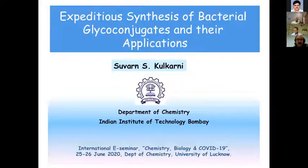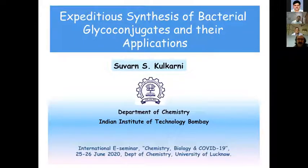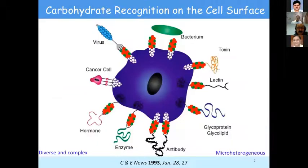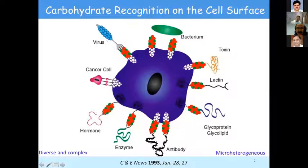Today I'm going to talk about synthesis of rare sugar-containing bacterial glycoconjugates — how we synthesize them and what kind of applications they have. As Professor Khare mentioned, carbohydrates are ubiquitously distributed on the cell surface where they participate in vital life processes such as bacterial and viral infection, cell-cell communication, and immune response.